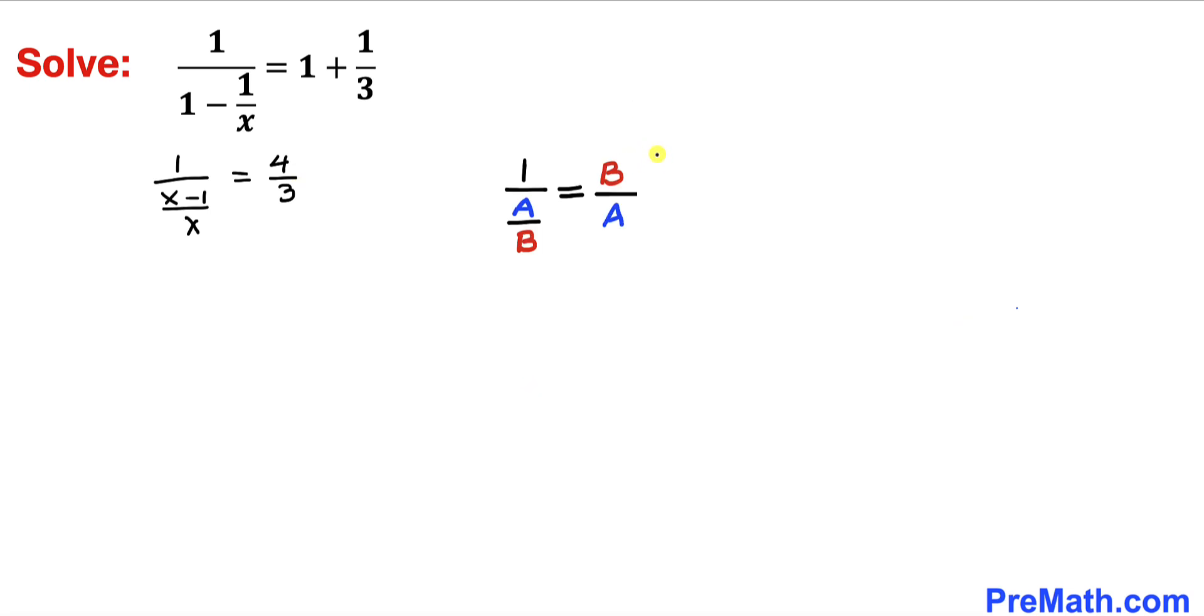Now let's recall our basic rule of fractions we're going to apply on the left hand side. So our left hand side could be written as x divided by x minus 1 equal to 4 divided by 3.